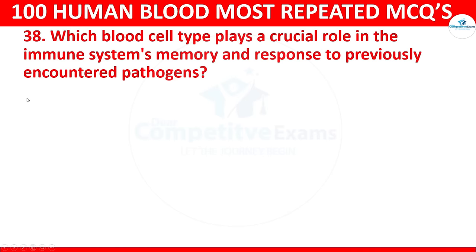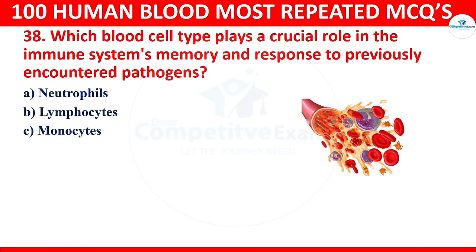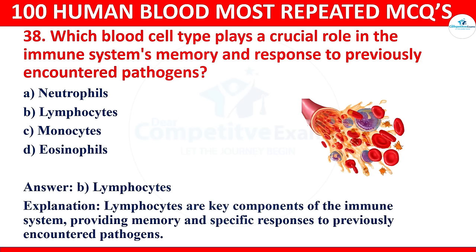Question 38: Which blood cell type plays a crucial role in the immune system's memory and response to previously encountered pathogens? Options: neutrophils, lymphocytes, monocytes, or eosinophils. The correct answer is lymphocytes. Lymphocytes are key components of the immune system, providing memory and specific responses to previously encountered pathogens.